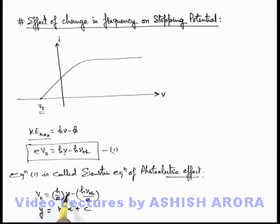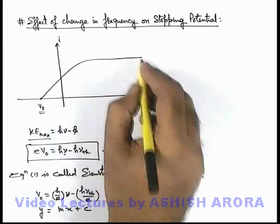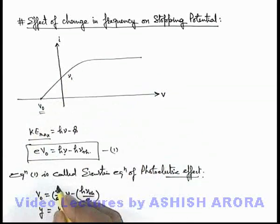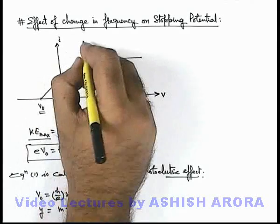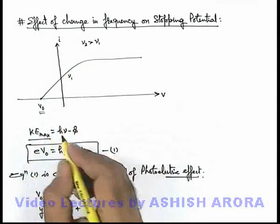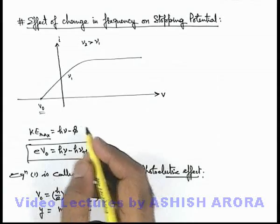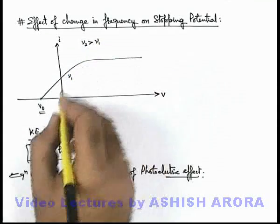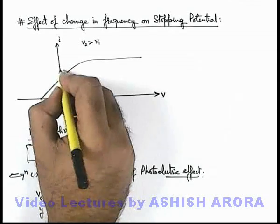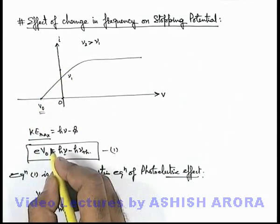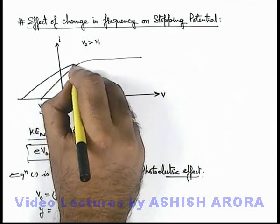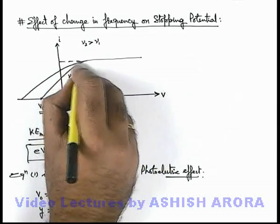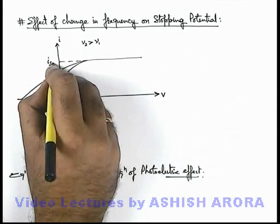So in this situation on increasing frequency, stopping potential also increases. Say if this curve is plotted at a frequency nu 1, and in this situation if we increase the frequency to nu 2 which is more than nu 1, we can see that at a higher frequency the ejected electrons will have more kinetic energy. Then at zero potential also, the current will be more. So the graph will be plotted like this, but here you can see the saturation current will not going to be changed.